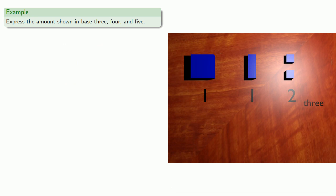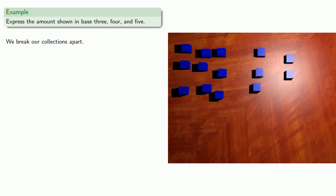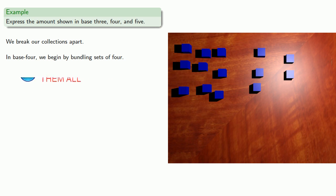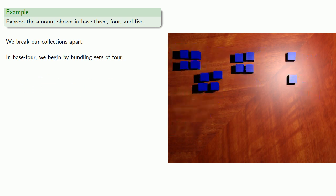Now, if we want to express our amount in base 4, we'll break our collections apart. And in base 4, we begin by bundling sets of 4. And again, arithmetic is bookkeeping, and so we have 3 medium, 2 small, and the amount is 3, 2, base 4.